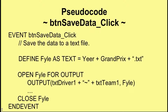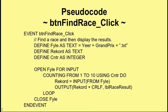Now the final event: button find race click. Whilst this looks a little more complicated, it's actually quite easy. We define our pipe the same way: file equals year plus grand prix plus '.txt'. We define a variable called 'record' — spelt with a K because 'record' is a defined name in some languages — which will hold a line of text. And since I know there are ten lines in the file, I'll use a counted loop, so I also need a counter variable defined as CNTR — mainly because I can't spell counter — as integer.